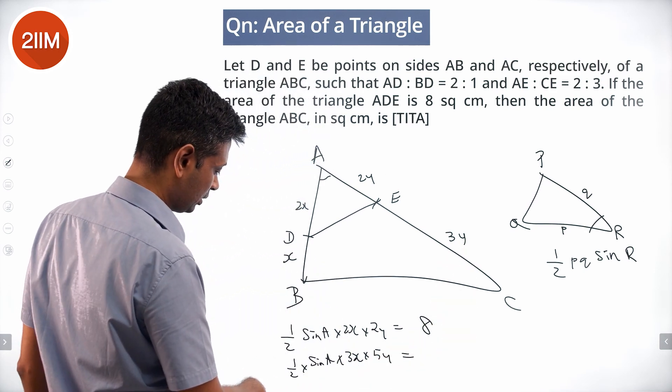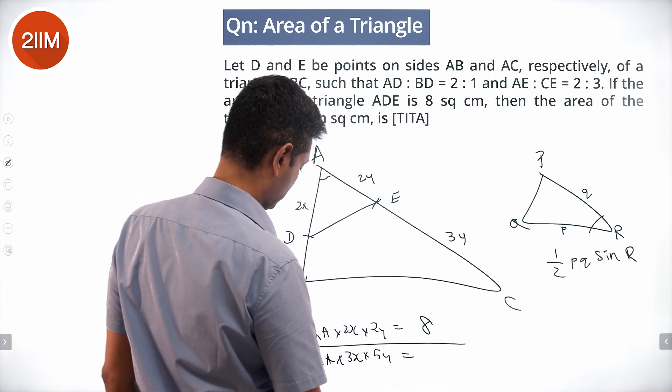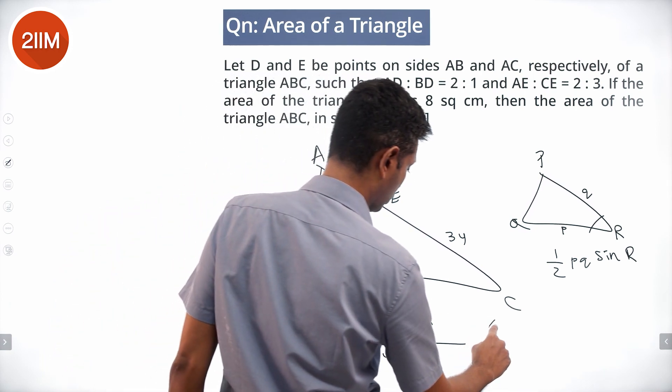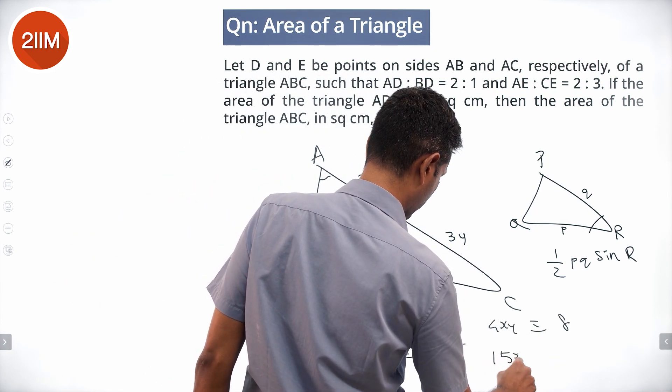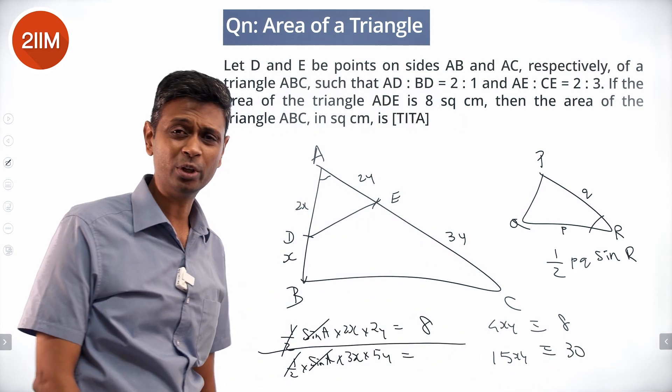So divide one by the other. This sine A will go away. 4xy goes with 8. 15xy would go with 30, into 3 by 2 into 5 by 3.